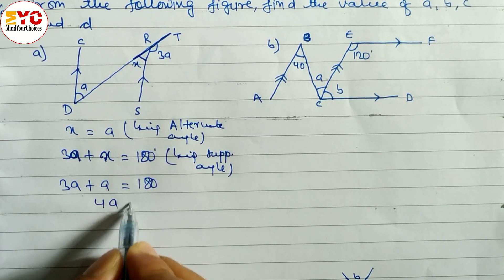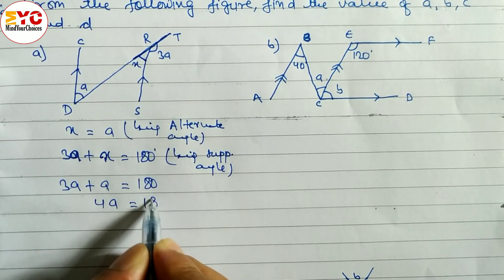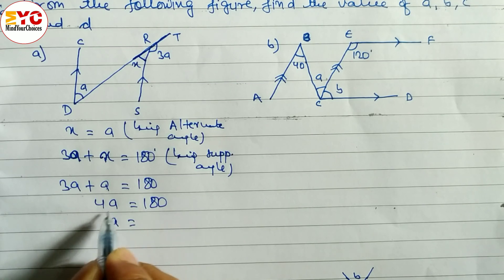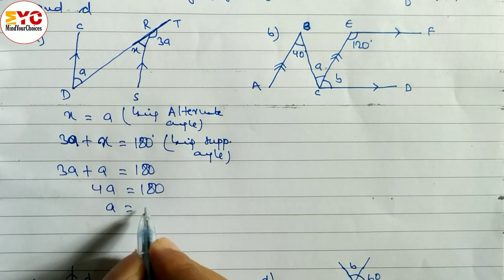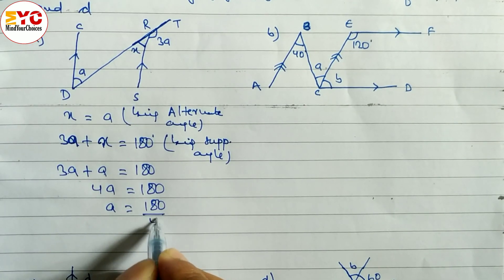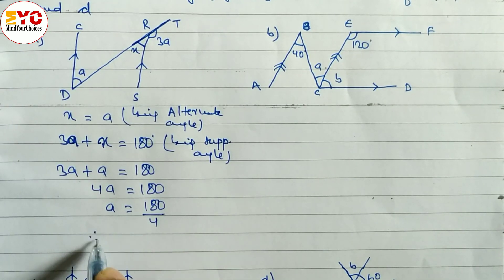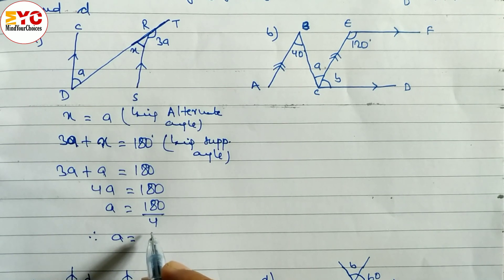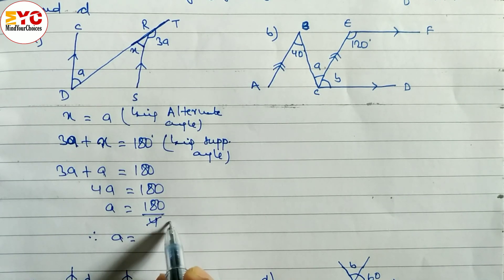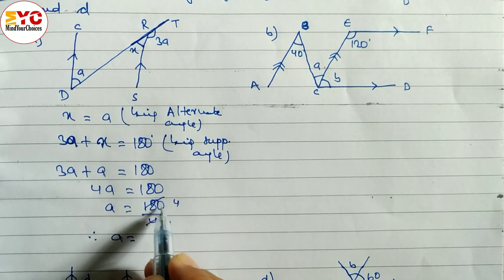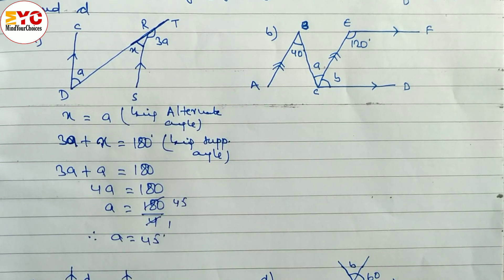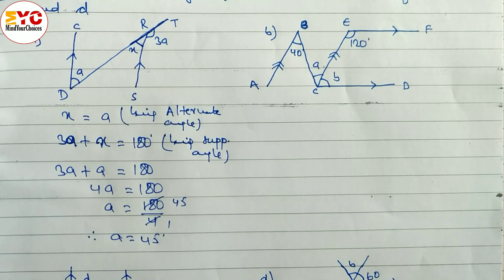When you add we get 4a. 4a is equal to 180. So a is equal to 180 divided by 4. Therefore, a is equal to 45 degrees. So 45 degrees is the answer.